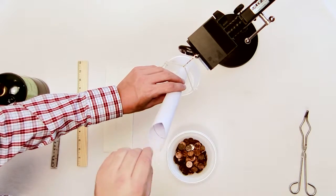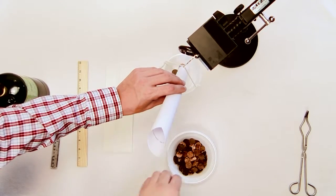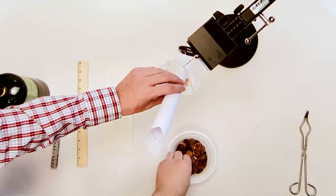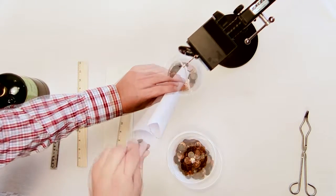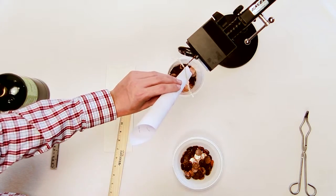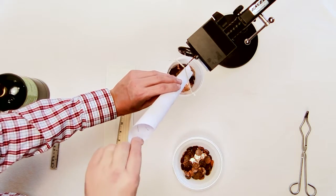Create a paper funnel by rolling a piece of paper and either stapling it or taping it. Using the funnel, start placing pennies into the cup one at a time. The pennies should be funneled in at a steady pace, but in a way that they do not fall a large distance when they enter the cup.